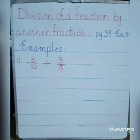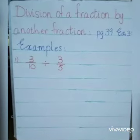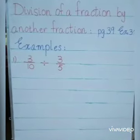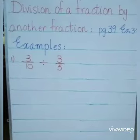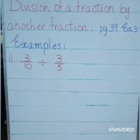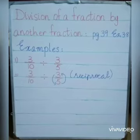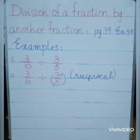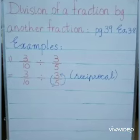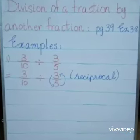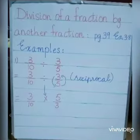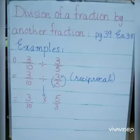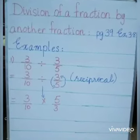Example number one: 3 over 10 divided by 3 over 5. We take the reciprocal of the second fraction, 3 over 5. As the arrows show, the numerator becomes the denominator and denominator becomes the numerator. Next, the sign of division changes to the sign of multiplication.